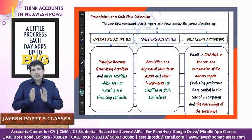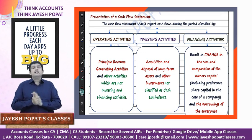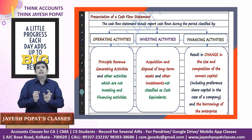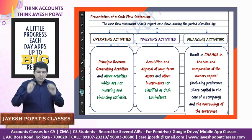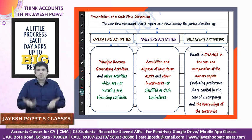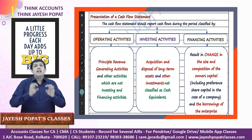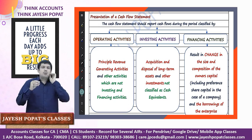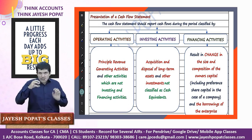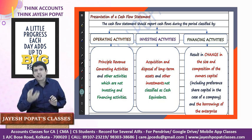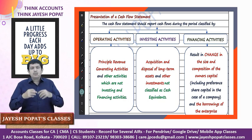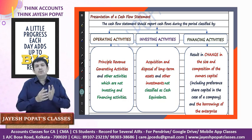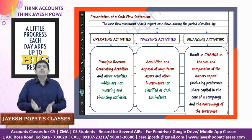The cash flow statement presents inflow and outflow of cash and cash equivalents categorized into three activities: operating, investing, and financing. Operating activities are the principal revenue-generating activities of the enterprise and other residual activities which cannot be categorized into investing or financing activities. The main normal activities in which the business deals - such as cash flows from sale of goods, realization from debtors, purchase of goods, payment to creditors, and meeting normal operating expenses - fall under operating activity.